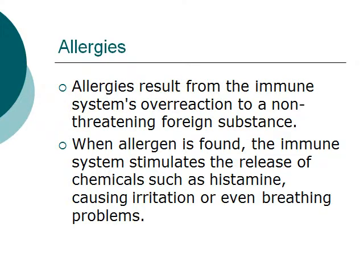One very famous type of immune system disorder is called allergies. Allergies are the result of the immune system's overreaction to a non-threatening foreign substance. For example, peanuts are usually non-threatening, but allergies would result in an immune system overreaction to peanuts. When an allergen is found — in this example, peanuts — the immune system would stimulate the release of chemicals such as histamine, which can cause irritation or more complex problems such as breathing problems or even death.